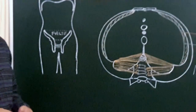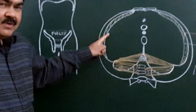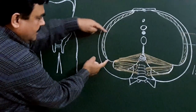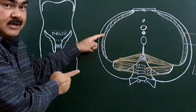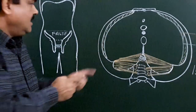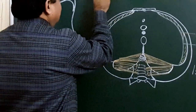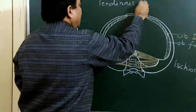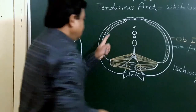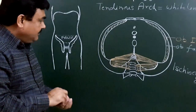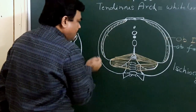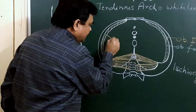The ischiococcygeus arises from the ischial spine. The muscle which takes origin from the posterior half of the obturator fascia forms a tendinous arch, also known as the arcus tendineus. This is the tendinous arch. Another muscle of this region, the iliococcygeus, takes origin from the posterior half of this white line.